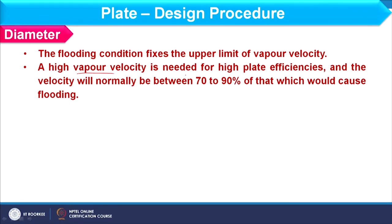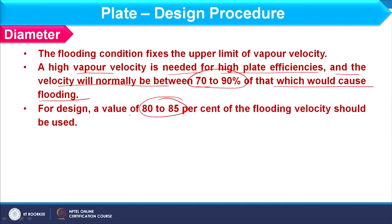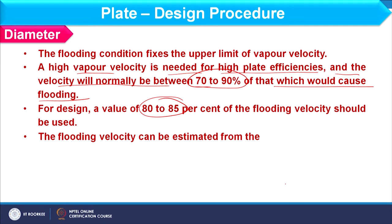A high vapour velocity is needed for high plate efficiency, and velocity will normally be between 70 to 90 percent of that which will cause flooding. To ensure proper operation, we should choose the vapour velocity accordingly — 70 to 90 percent of the flooding velocity. The recommended value in this range is 80 to 85 percent. Therefore, we should first calculate the velocity at which flooding will occur, which we consider as the flooding velocity, and then choose the vapour velocity as about 80 to 85 percent of that flooding velocity.